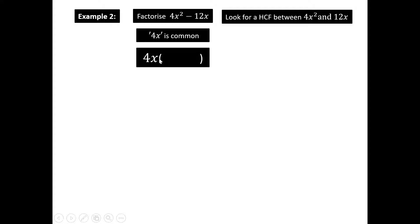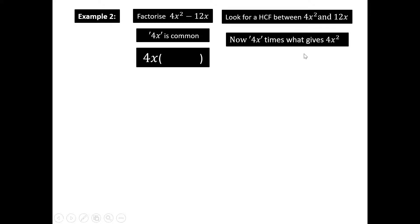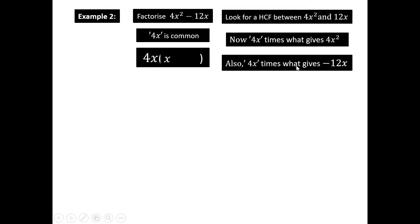Once we've identified 4x is common, 4x is written outside the bracket. We ask: 4x times what gives the first term? 4x times x gives 4x², so x goes inside the bracket. Then there's a negative sign. 4x times what gives negative 12x? 4 times negative 3 is negative 12, and x is already outside, so it's minus 3. Close the bracket. Expanding to check: 4x times x is 4x², and 4x times negative 3 is negative 12x — done correctly.